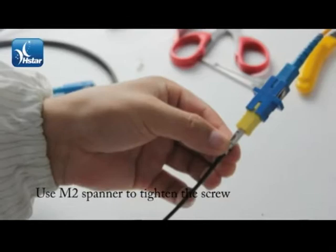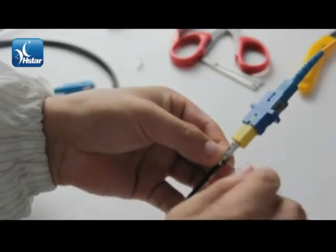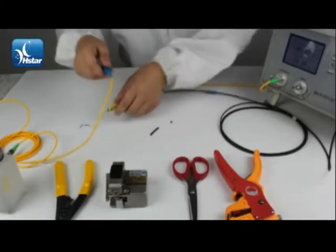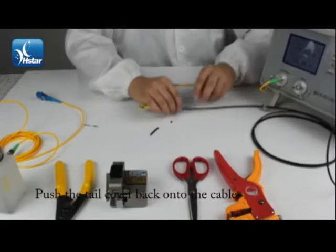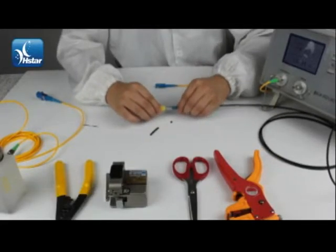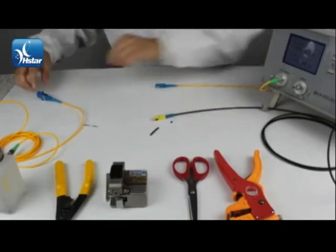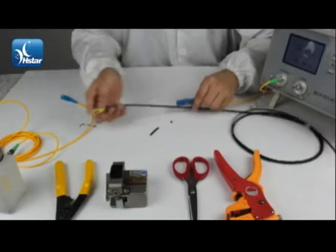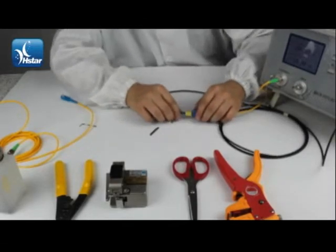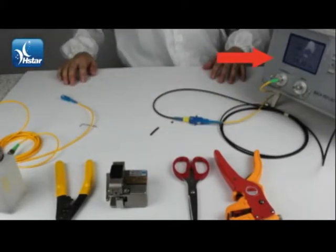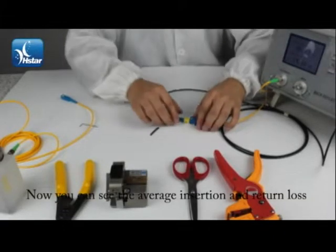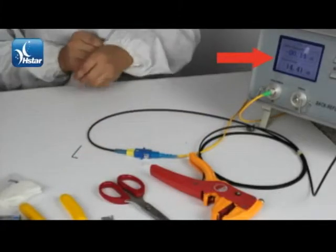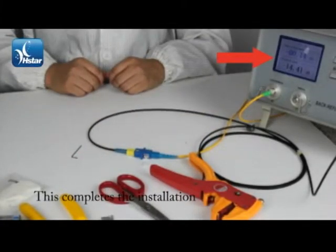Use M2 spanner to tighten the screw and push the tail cover back onto the cable. Now you can see the average insertion and return loss. This completes the installation.